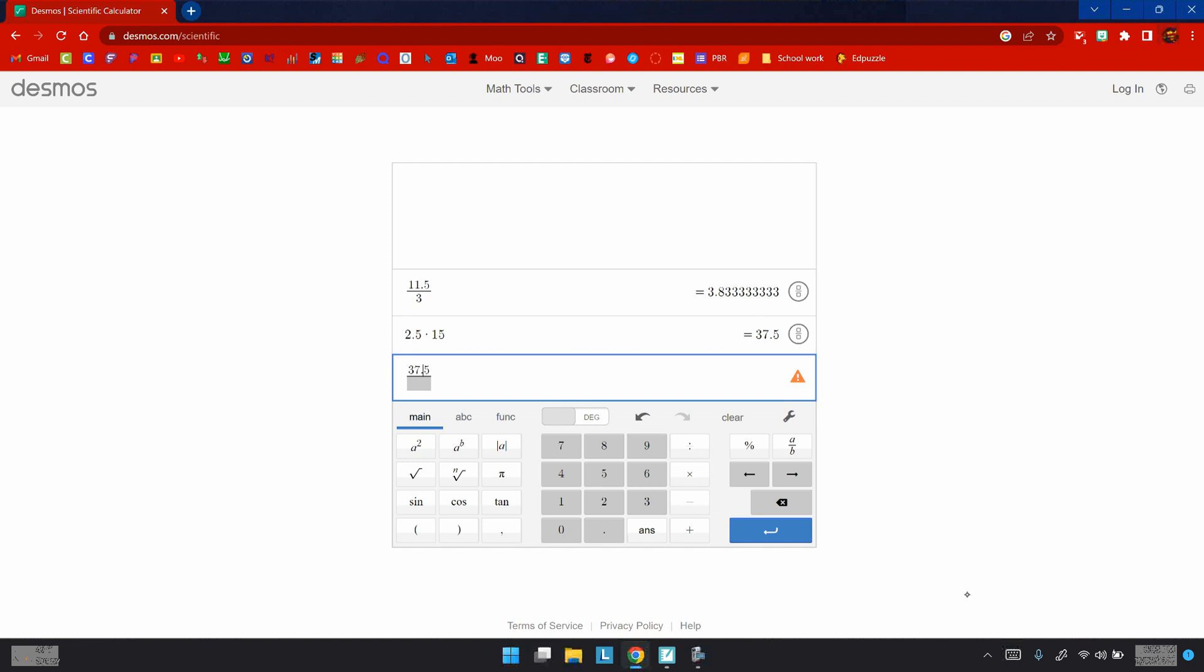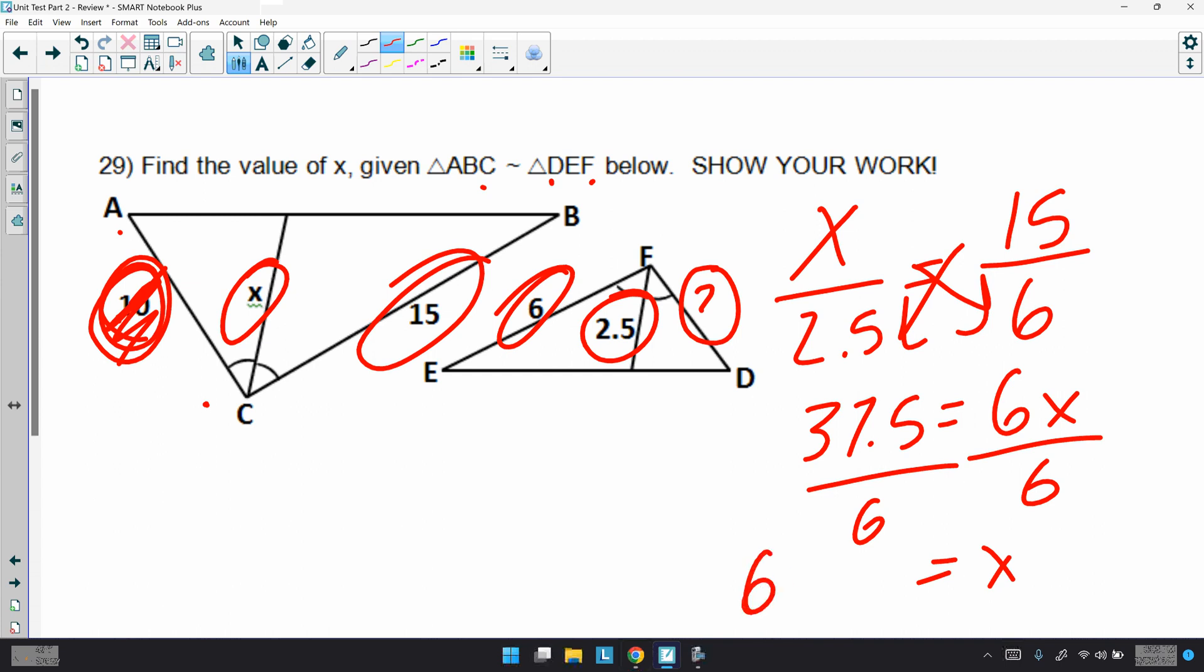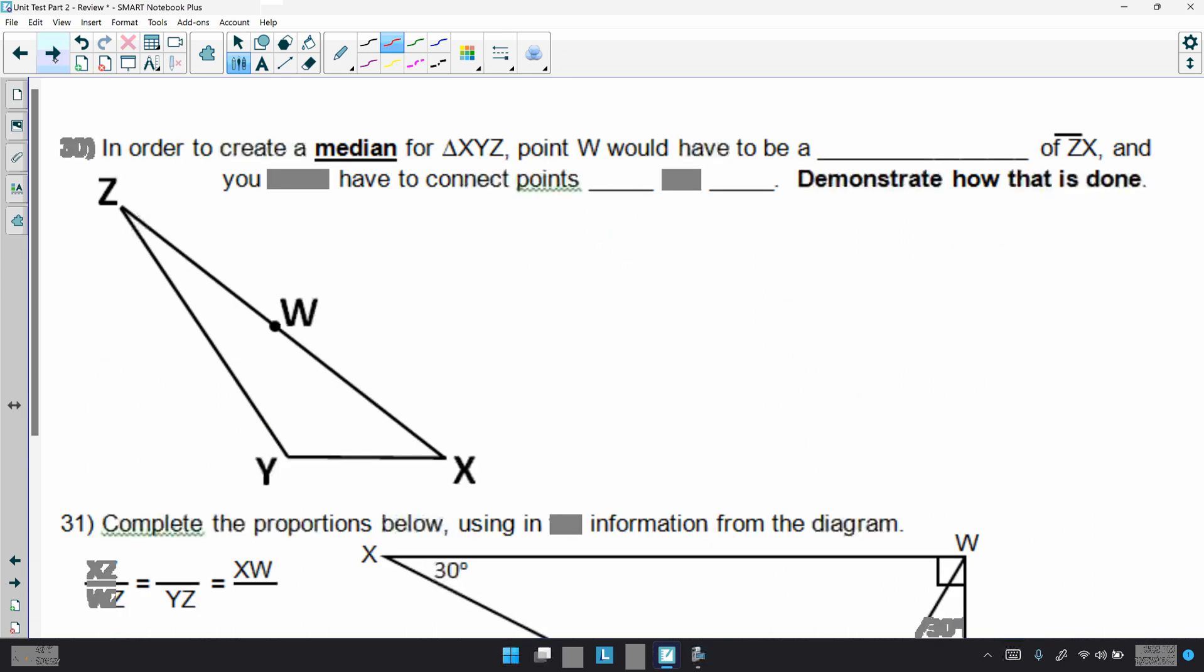Boom. We are almost done, ladies and gentlemen. In order to create a median for triangle XYZ, point W would have to be, it's right smack dab in the middle, so it must be a midpoint of ZX. And, you would have to connect points Y and W. This says to demonstrate it, so I'm just going to draw a line right here. All done.